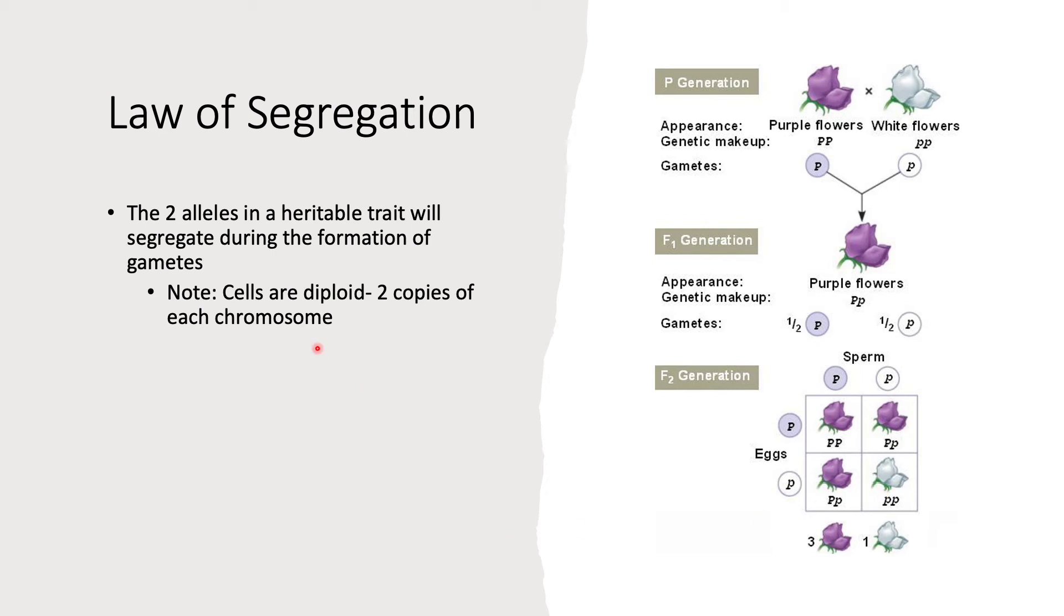Through meiosis, which is formation of gametes, and that is involved in the process of mating and forming offspring, you're going to see a pool of different alleles and how they interact. The two alleles in a heritable trait will segregate during the formation of gametes. So we're going to say this is a true bred father purple, true bred white. So big P, big P, because it is true bred. It's not a hybrid of any sort. Big P, big P, little p, little p.